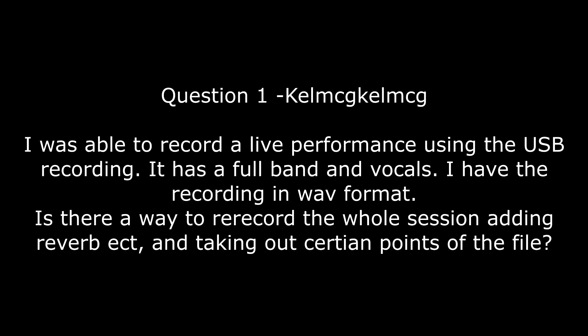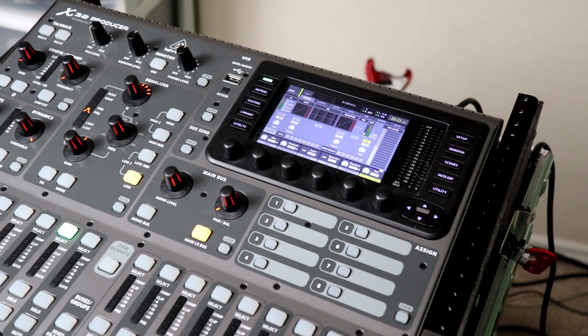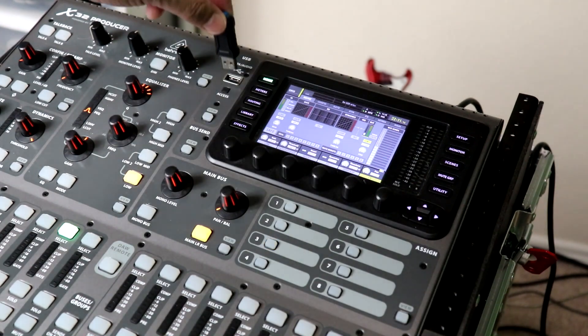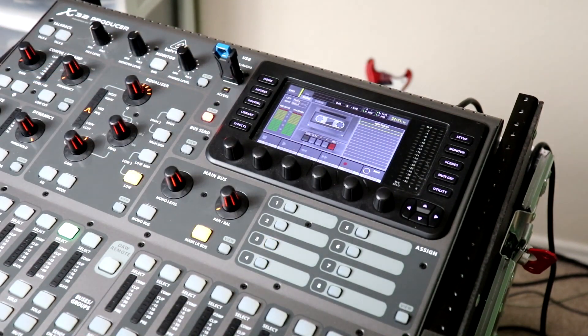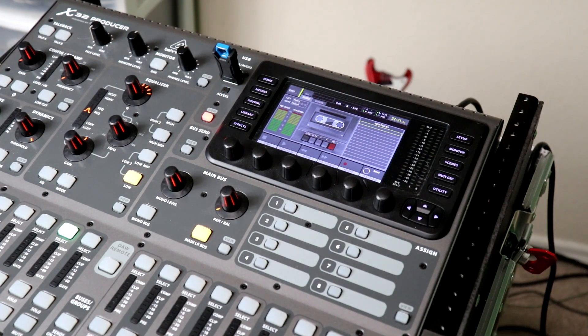Our first question — I'm just going to call you Kelm. Kelm says: I was able to record a live performance using the USB recording. It has a full band and vocals. I have the recording in WAV format. Is there a way to re-record the whole session, adding reverb, etc., and taking out certain points of the file? So: you recorded a session using a thumb drive and the recorder built into the Behringer X32 mixer, and now you want to add reverb and compression to that recording?